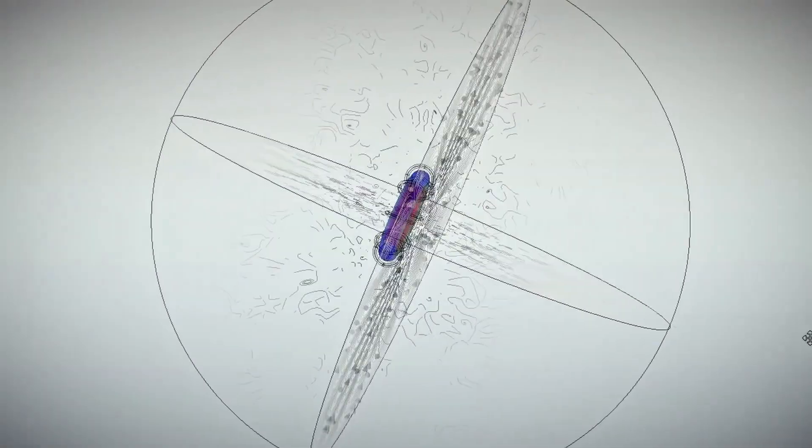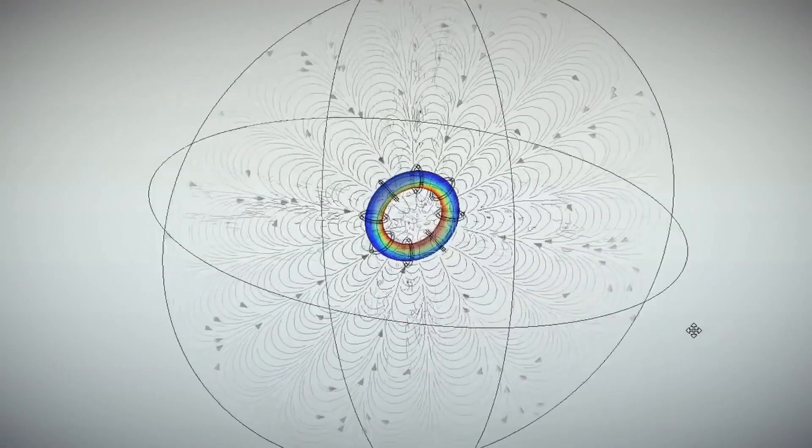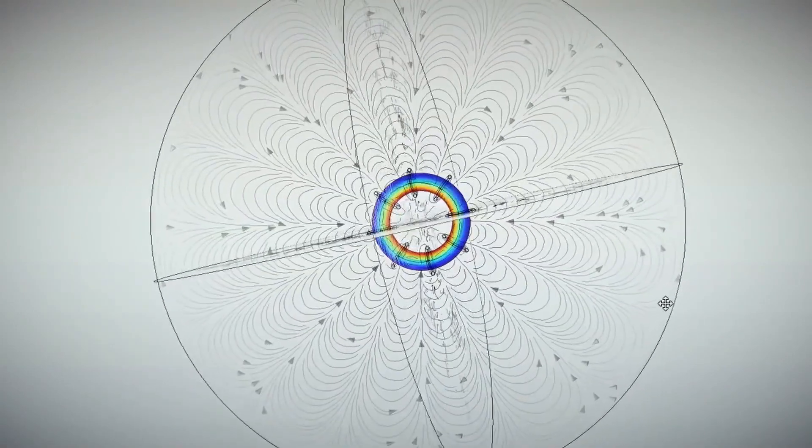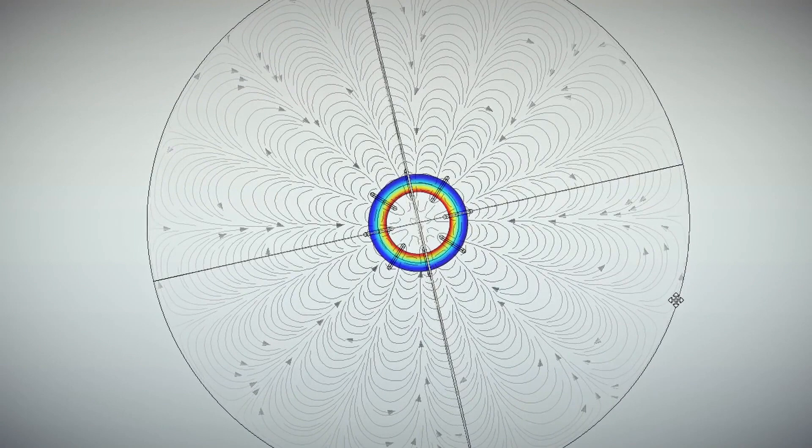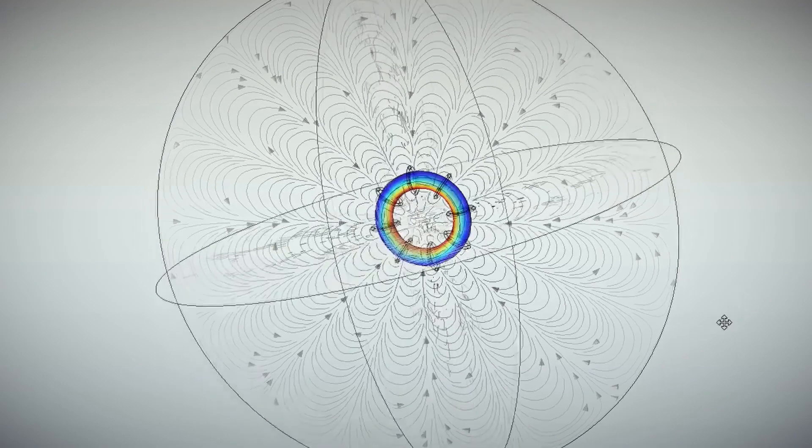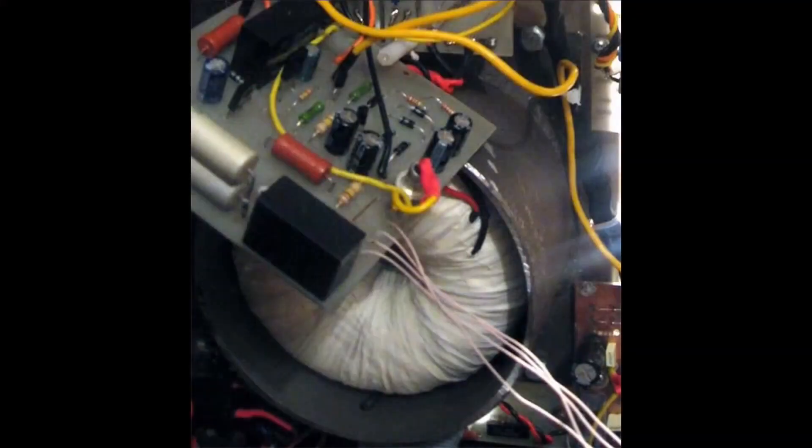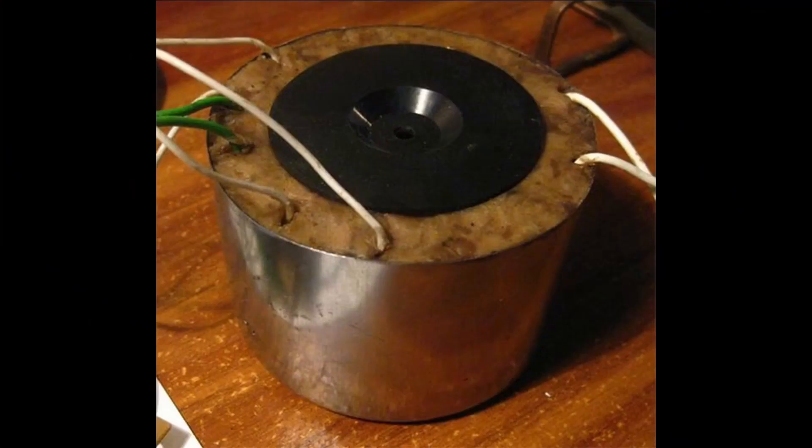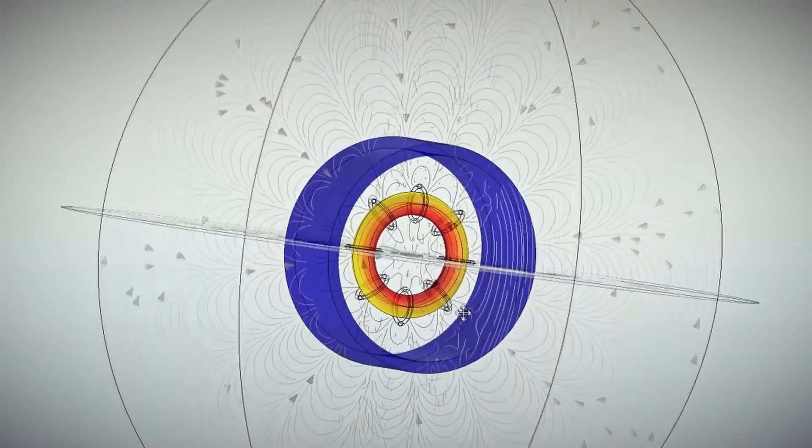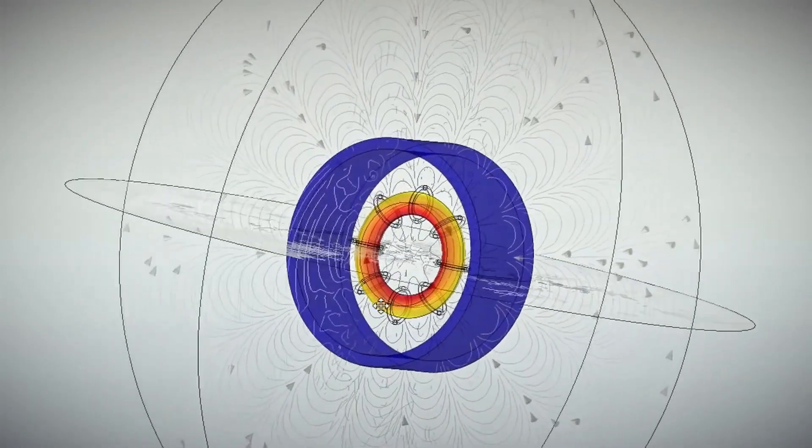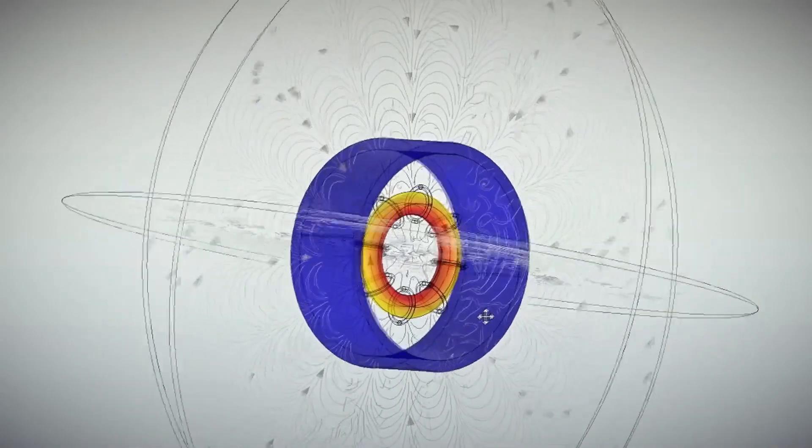Here's what the field of a toroidal coil looks like. You can see that most of the field is inside the core and is closed. However, between the turns, the field emerges outside, like a beautiful flower. This means that the tighter the torus is wound, the less it radiates into the space. By the way, this is exactly why network toroidal transformers are shielded with a strip over the windings. Thus, the field that emerges between the turns will close on the shield, and further radiation will be minimal.